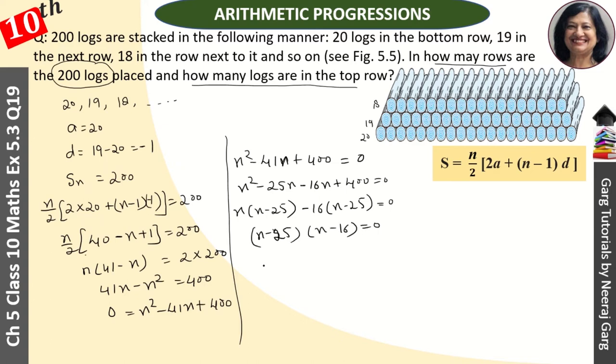That equals 0. So N has two values: 16 and 25. We reject 25. Why reject 25? Because our sequence was 20, 19, 18. Logs won't go to minus values. Maximum 1 log will be on top. So 25 rows cannot be possible; more than 20 rows is not possible. So we reject 25.